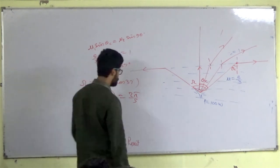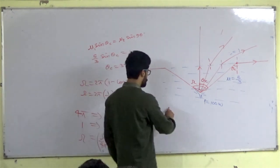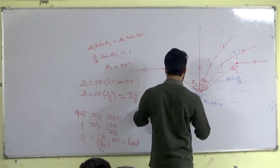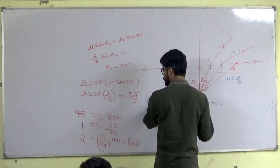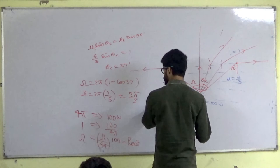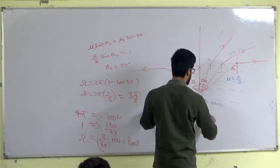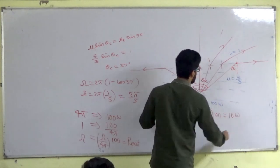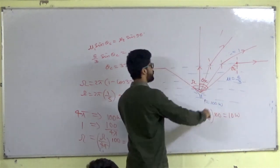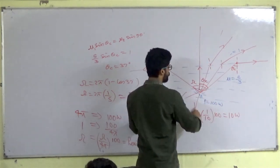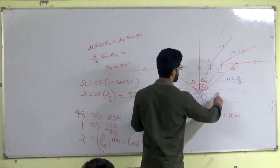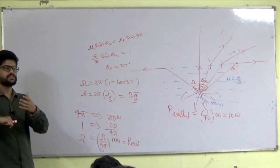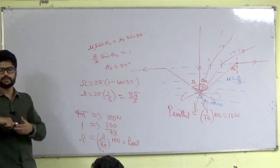The power exiting the water surface is 10 watts. Omega = 2π/5, so omega/(4π) = 1/10, and 1/10 × 100 = 10 watts. This is because the power is uniformly distributed in every direction. The key concept is solid angle — when light spreads spherically, the fraction of power in any cone is proportional to its solid angle.